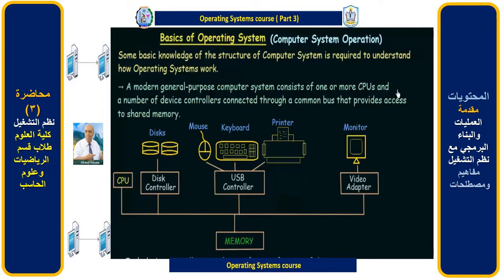That small chip is responsible for performing all the computations and calculations — that is your actual CPU. So that box itself you can just call a cabinet, but the CPU is just a small unit present inside that box on your motherboard. Modern computer systems may have one or more CPUs depending on the processing power of the computer.